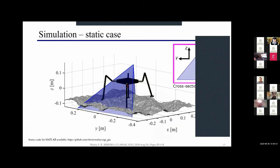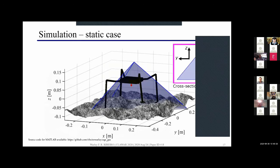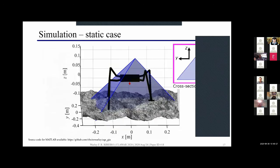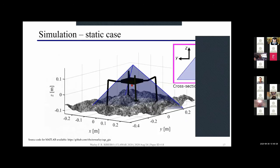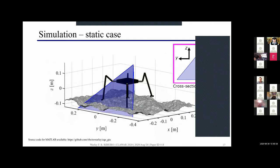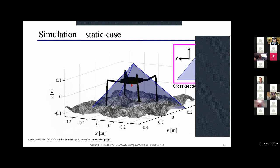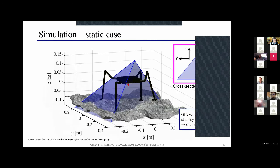For the first case I consider a static one. The GIA vector here in red coincides with the gravity vector and we can see the stability polyhedron here in blue is composed by three planes because we have three possible tumbling axes. In this case the GIA vector is inside the polyhedron so the robot is in equilibrium.